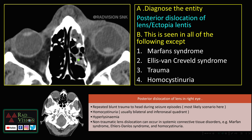Next, the right lens is in position whereas the left lens shows posterior dislocation — ectopia lentis. This is seen in Ellis-van Creveld syndrome, and is associated with repeated blunt trauma during seizure episodes, commonly seen in homocystinuria, hyperlysemia, and other connective tissue disorders such as Marfan syndrome, Ehlers-Danlos syndrome, and homocystinuria.